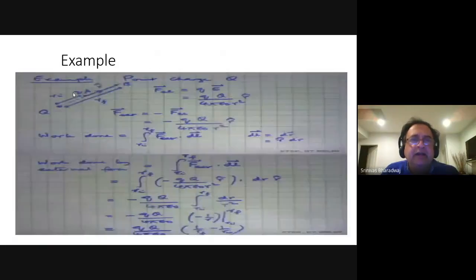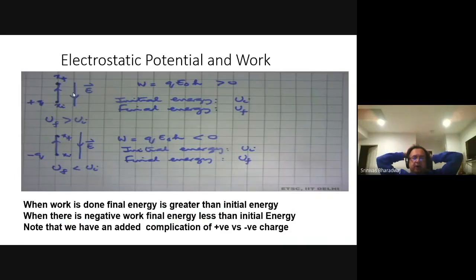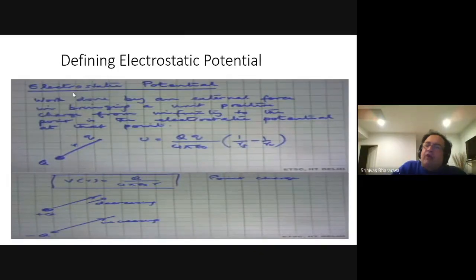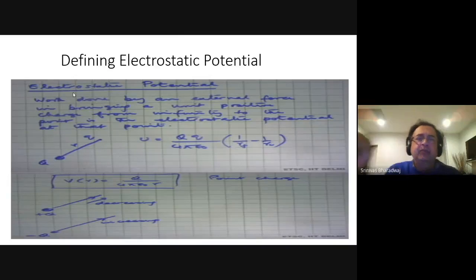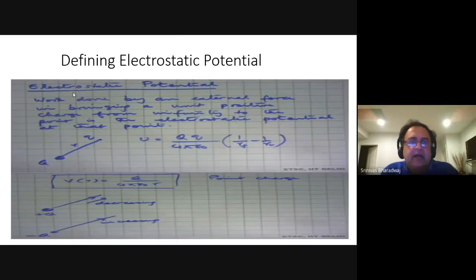Let us understand the idea of electrostatic potential. Any potential — when the field is only a function of position — means there is path independence. When there is path independence, you have V(R). If you have potential at point A and potential at point B, the difference is called the potential difference. The potential at a particular point is defined as the work done by an external force in bringing a unit positive charge from infinity to that point.